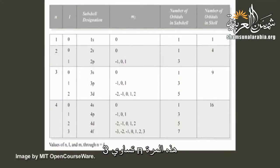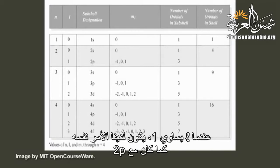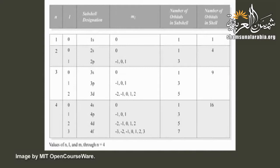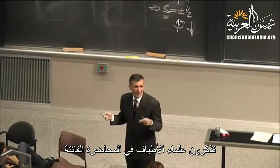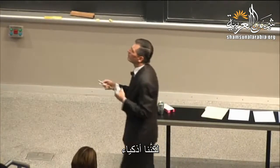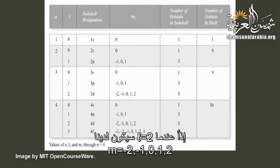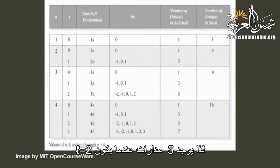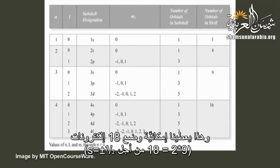For n equals 3: at l equals 0 we have 1 orbital, at l equals 1 we have 3 (the 3p), and at l equals 2 — the 3d — m can go from −2 to +2, giving 5 orbitals. So 5 plus 3 plus 1 is 9, times 2 is 18 possible electrons in the n equals 3 shell.